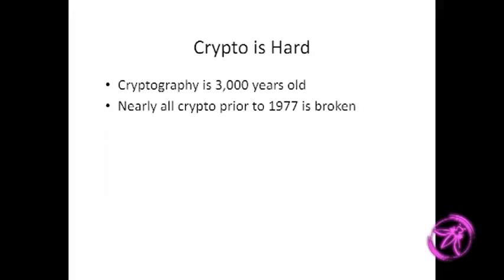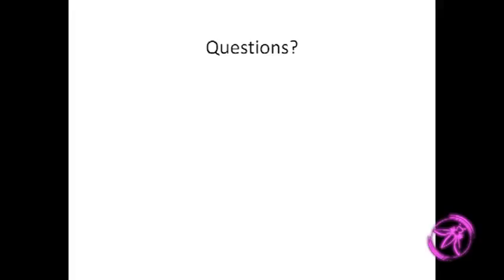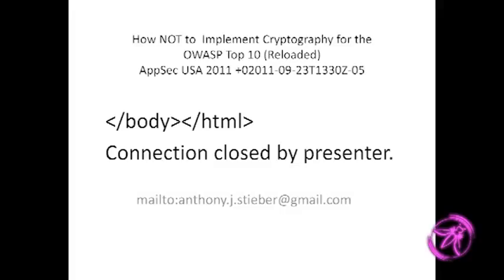So why is all this so difficult? Cryptography could be estimated as being about 3,000 years old — maybe even as old as language itself. Almost all crypto prior to 1977 has been broken; what we've got today just hasn't been broken yet — hopefully it won't be. Feel free to contact me with questions at anthony.j.stieber at gmail.com. Thank you.